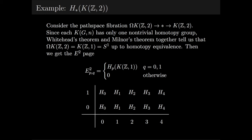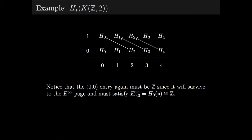Then we get the following E² page. Once again, we have to determine which of these differentials are non-trivial. So notice that the (0,0) entry again must be Z, since it will survive to the E^∞ page, and must satisfy E^∞_{0,0} is H₀ of star, which is of course Z.